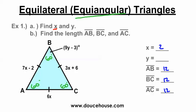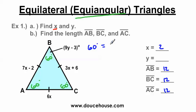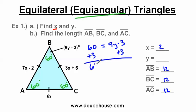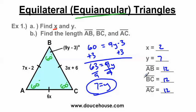With this information, I know this angle is equal to 60 degrees, and it's also equal to 9Y minus 3. So: 60 equals 9Y minus 3. Adding 3 to both sides gives 63 equals 9Y. Dividing by 9, I get Y equals 7. To double check: 9 times 7 minus 3 equals 63 minus 3, which equals 60. So we know that's correct.